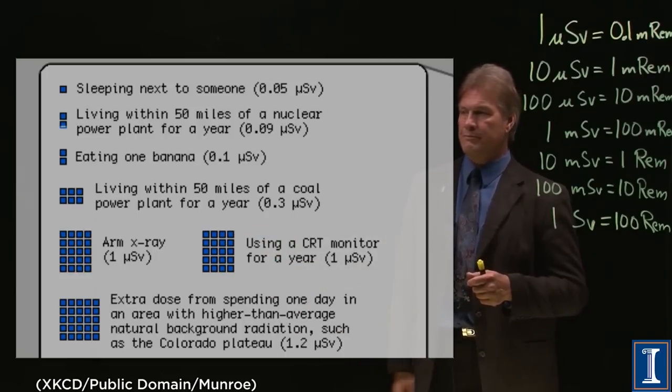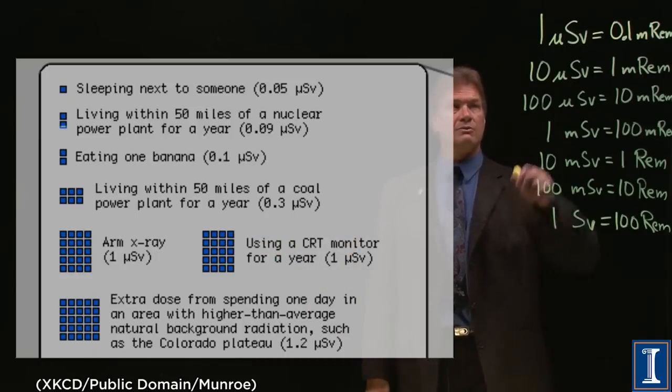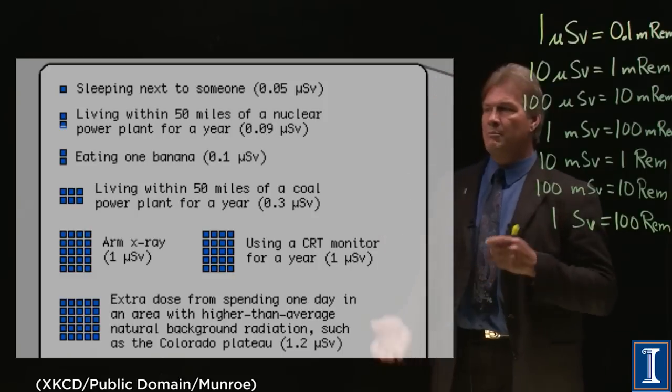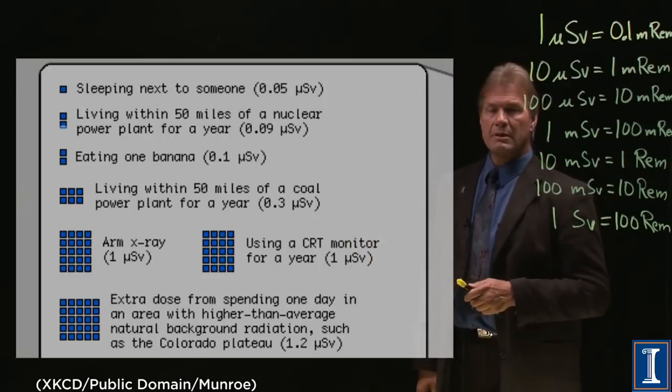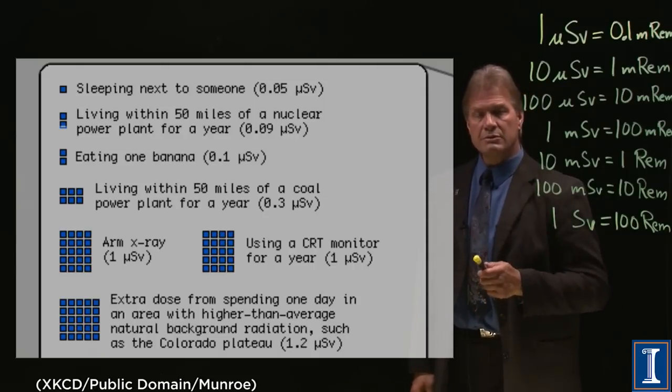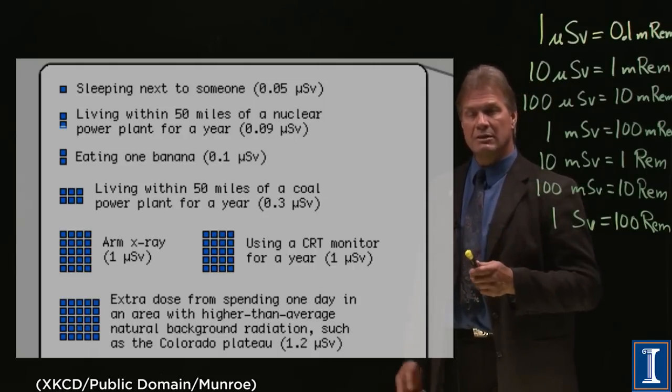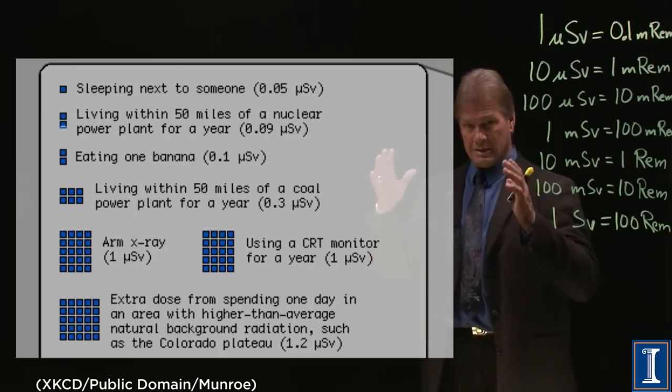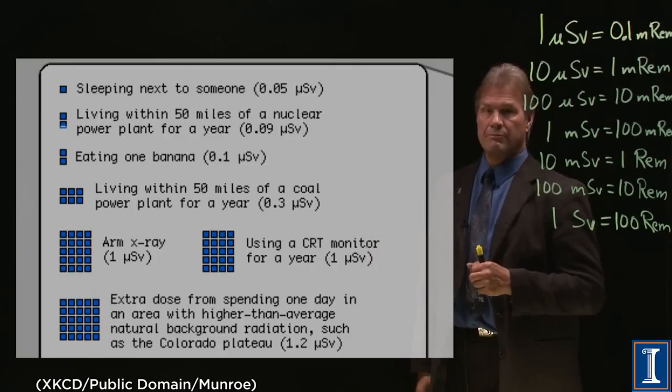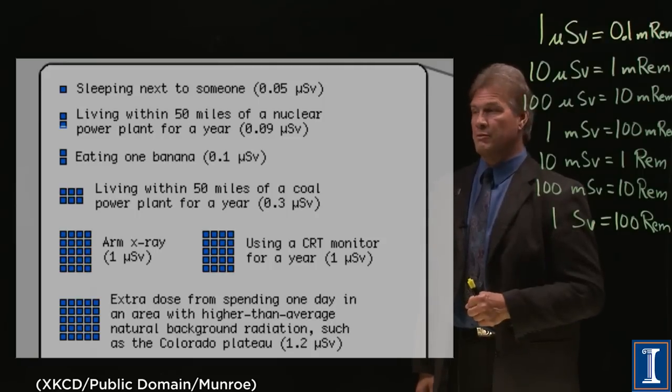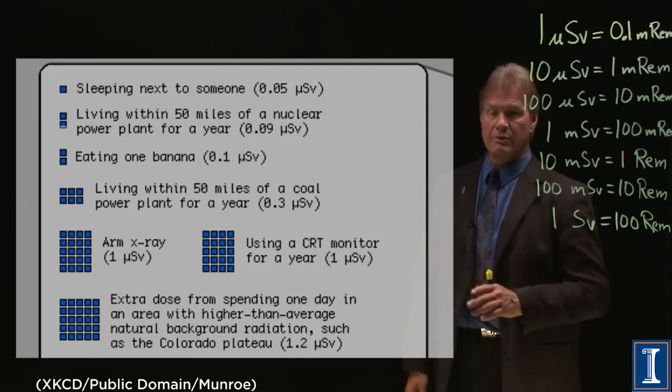An x-ray. Finally, you get your arm x-rayed, it's a microsievert. A microsievert is a tenth of a millirem, and that's what you get. Or if you use a CRT, the old-fashioned television, the kind that's actually wide, or a computer screen, use that for a year, you get a whole tenth of a millirem. Nothing whatsoever to worry about.